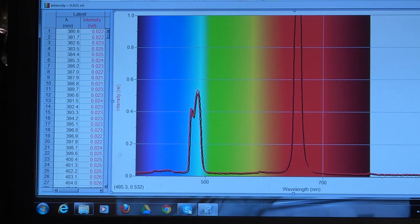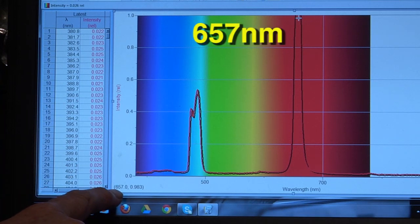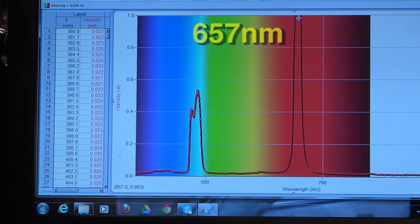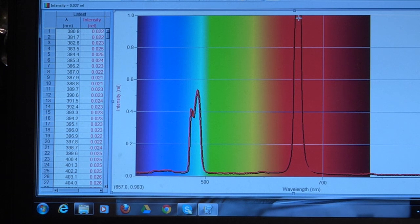If we move over here to this peak, it's 657 nanometers. So those three in the visible are characteristic of hydrogen. No other element is going to give you that same three wavelengths.